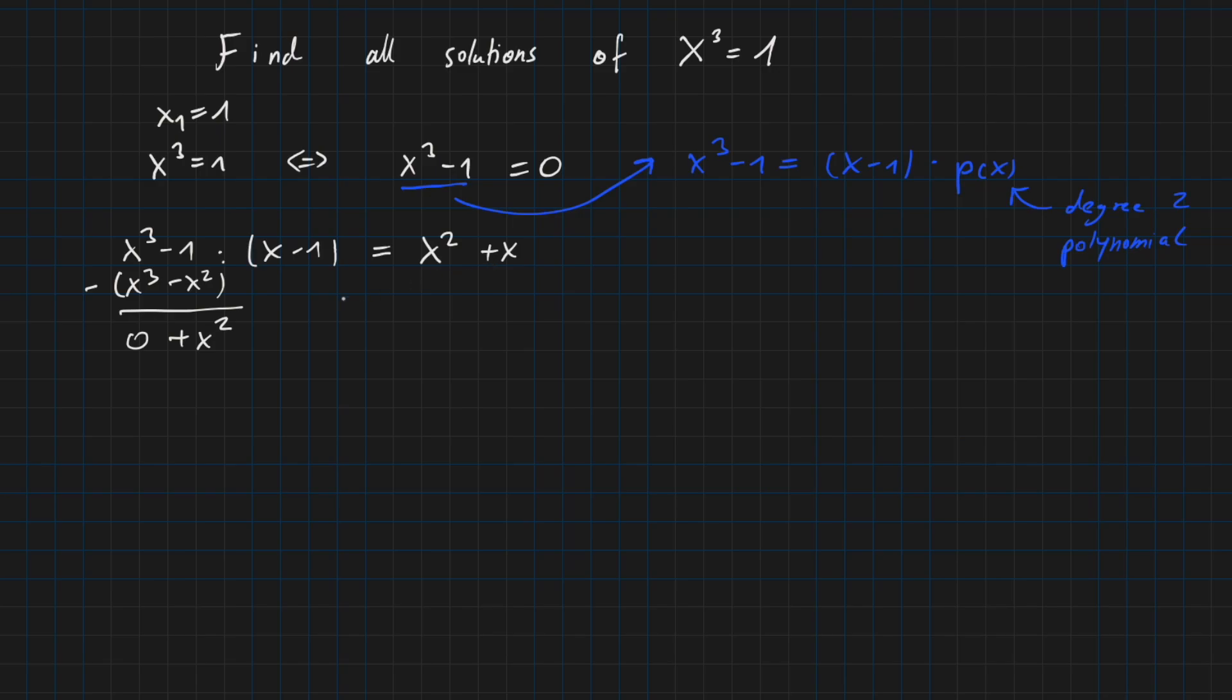So plus x times x is x squared, so we can again subtract x squared from here. And also x times minus 1 equals minus x. So this results into 0, because x squared minus x squared is 0. And then we have 0 minus minus x, which is plus x.